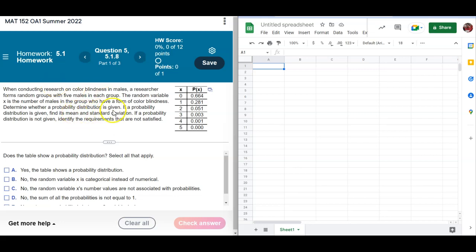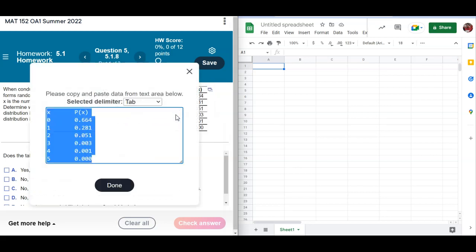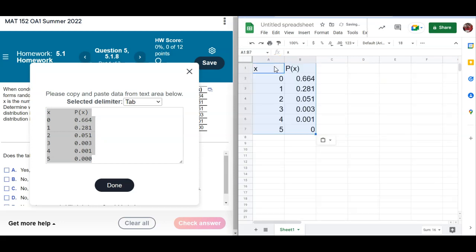Alright SATs class, let's look at this discrete random variable probability distribution. I'm going to copy this to the clipboard, and then come over here to Google Sheet and paste it in there.